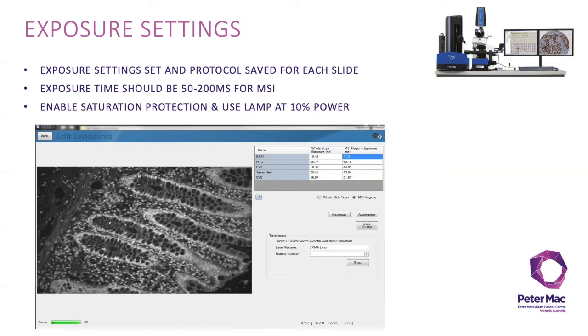For optimized panels, exposure time should range from 50 to 200 milliseconds for MSI regions. Make sure to always enable saturation protection. This protects against unexpectedly bright signals by reducing exposure if necessary. InForm then adjusts for differences in exposure times at each wavelength in unmixing, ensuring results can be compared between samples.